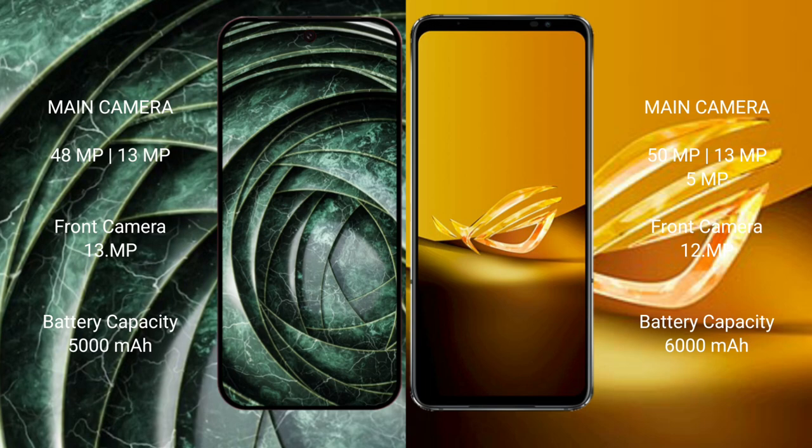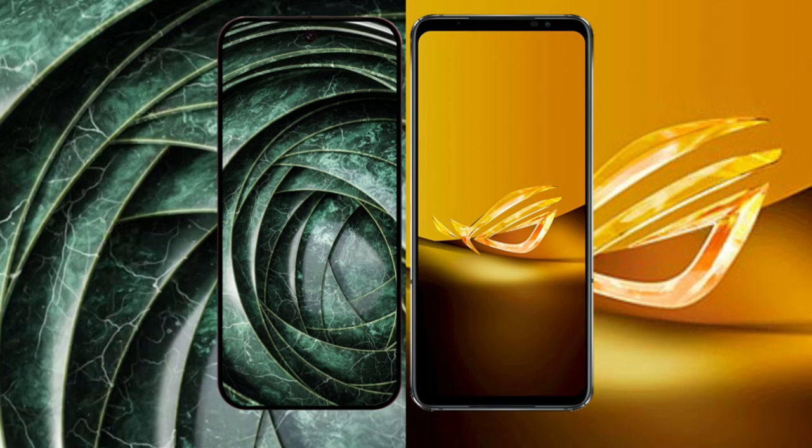ASUS ROG Phone 6D features a triple camera setup with 50-megapixel plus 13-megapixel rear cameras and a front camera of 12 or 9 megapixels. The Google Pixel 9a has a 5000mAh battery with 18-watt fast charging support. ASUS ROG Phone 6D has a 6000mAh battery with 65-watt fast charging support.